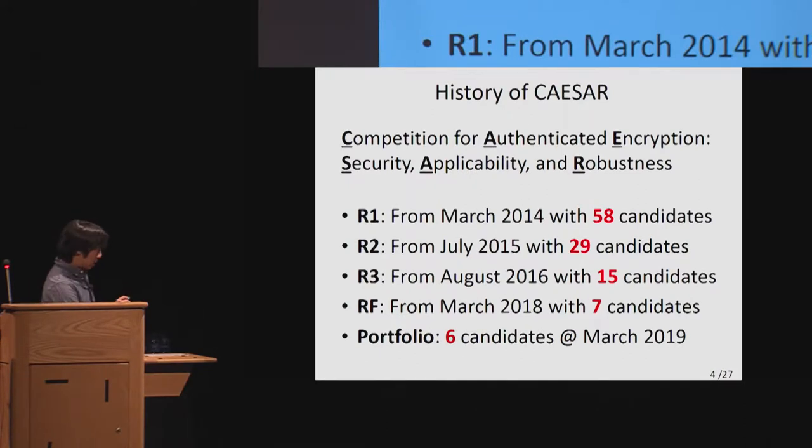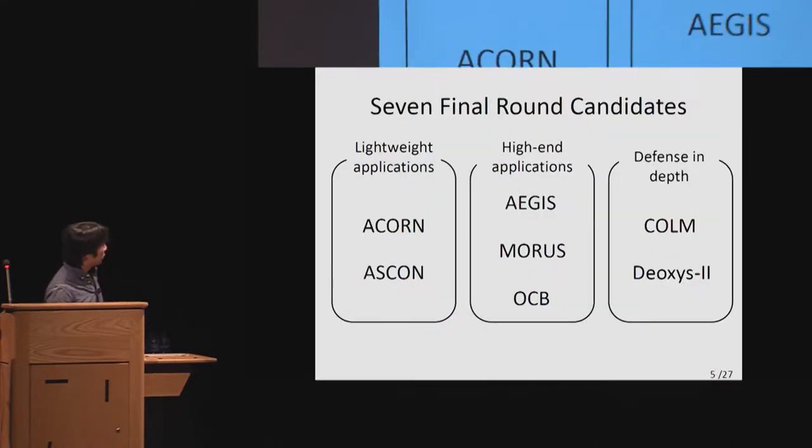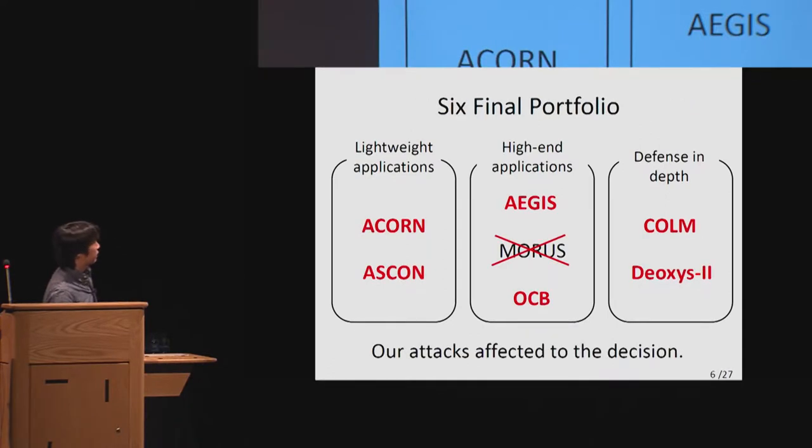Most notably, the last round started from March 2018, and seven candidates were selected for the final round. This year, six schemes were chosen as a portfolio. This is the list of seven final round candidates, and our attack target, MORUS, is in the center. This is the sixth final portfolio. You can see that MORUS was not chosen, and we guess that our attacks affected the decision.